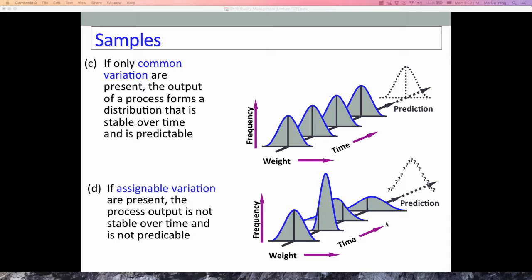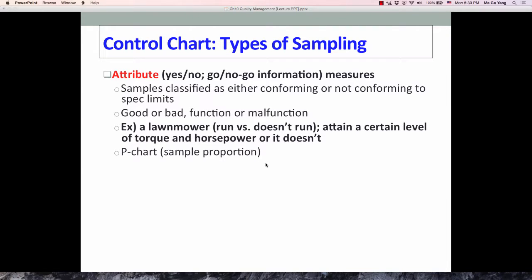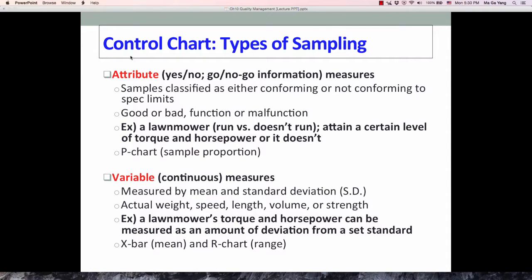In terms of types of sampling, before moving into control charts, we need to know the two different types. One is the attribute measure, where samples are classified as either conforming or not conforming to specification limits. Our conclusion would only be good or bad, functional or malfunction. For a lawnmower case, we can only conclude run or do not run. This uses the P-chart using sample proportion, which is not the case of this course.